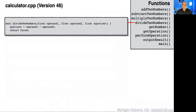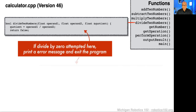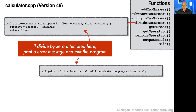One thing we should also note is that some operations can introduce errors into our system. For instance, if we're trying to divide two numbers and operand two — the denominator — is going to be zero, that will introduce an error. We want to make sure we catch that. If we divide by zero, we want to print an error message and exit the program. You can exit any C program with the exit statement followed by an error code value, and that will terminate the program right there.